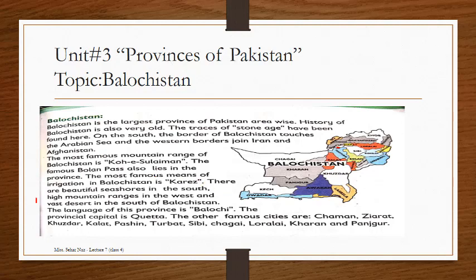The most famous means of irrigation in Balochistan is Karez. Karez is a traditional underground water channel system used in mountainous areas.